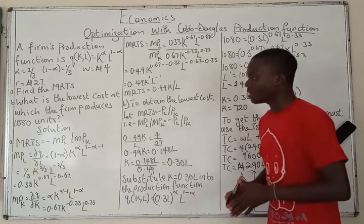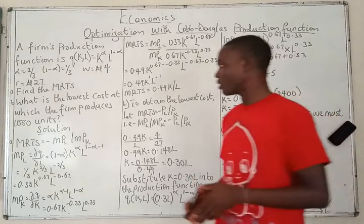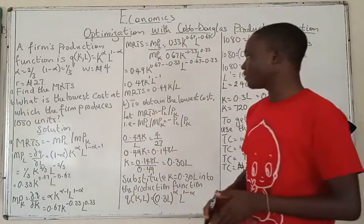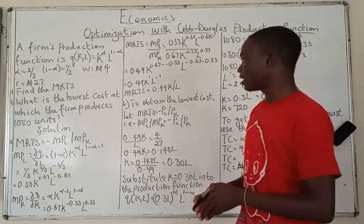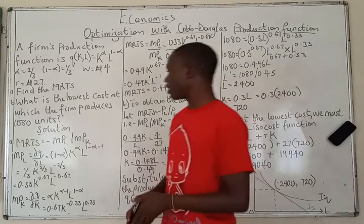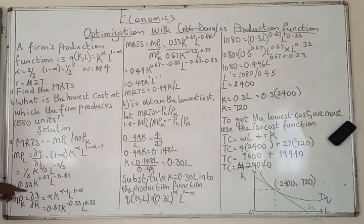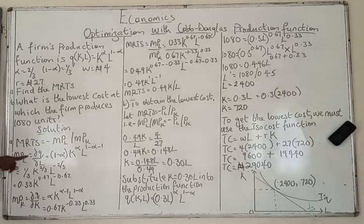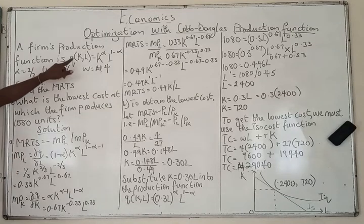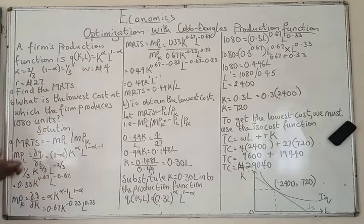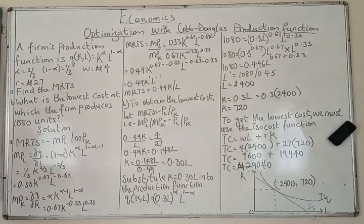To find the MRTS, we know that MRTS equals minus MPL divided by MPK — that is the ratio of the marginal product of labor to marginal product of capital. MPL is the change in Q with respect to change in labor. I'm using a partial derivative here because this function has both K and L. Note that A is assumed to be 1 if not shown.